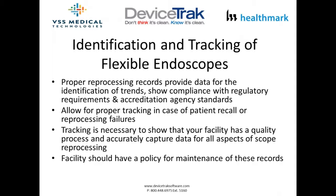Why is identification and tracking of flexible endoscopes important? We need proper reprocessing records that provide data and identification of trends. Those records show compliance with current regulatory requirements and accreditation agency standards. Proper identification and tracking allows for identification of patients in case of a reprocessing failure, which would necessitate a patient recall or infection control outbreak. Tracking is necessary to show your facility has a quality process. You should also have a policy in place on how to maintain and recall these records.